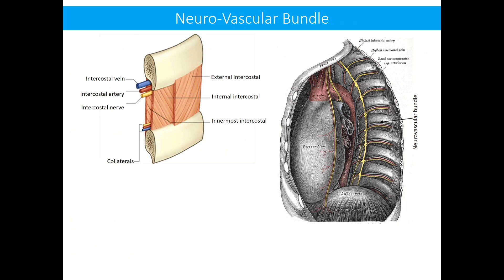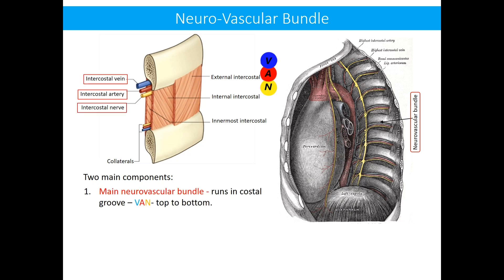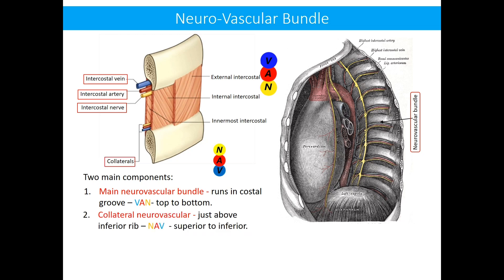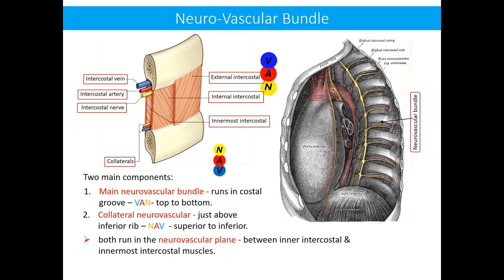The neurovascular bundle of an intercostal space has two main components. Number one: the main neurovascular bundle, which runs in the costal groove in the sequence of vein, artery, and nerve from top to bottom. Number two: the collateral neurovascular bundle, which runs just above the lower rib in the sequence of nerve, artery, and vein from superior to inferior. Both these bundles run in the neurovascular plane, which lies between the internal intercostal and innermost intercostal muscles.